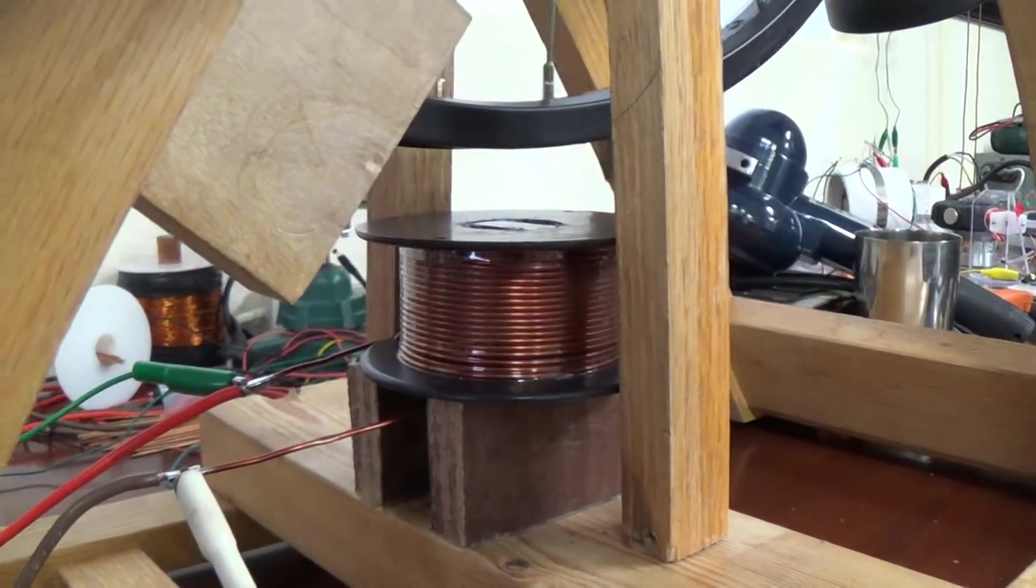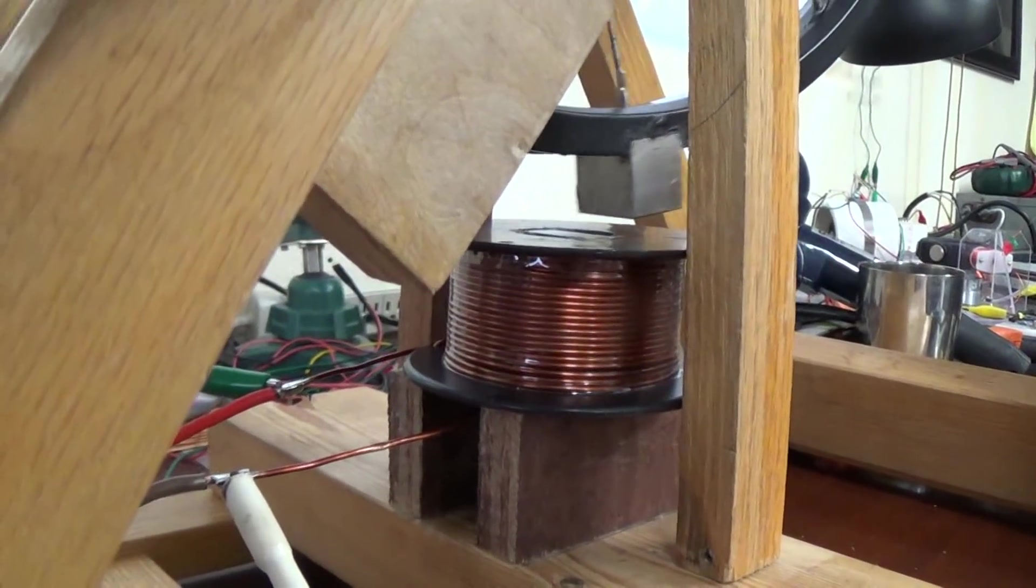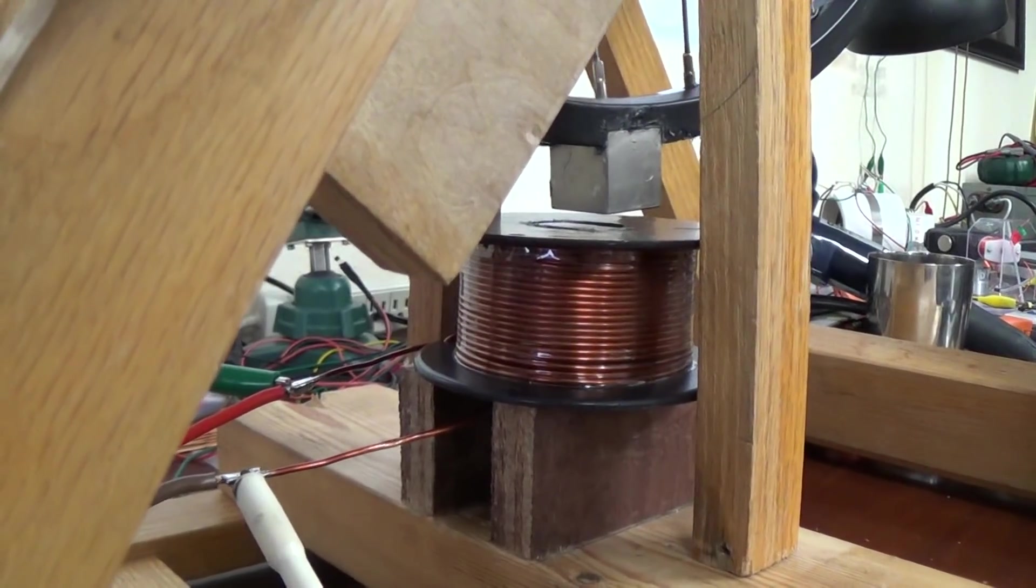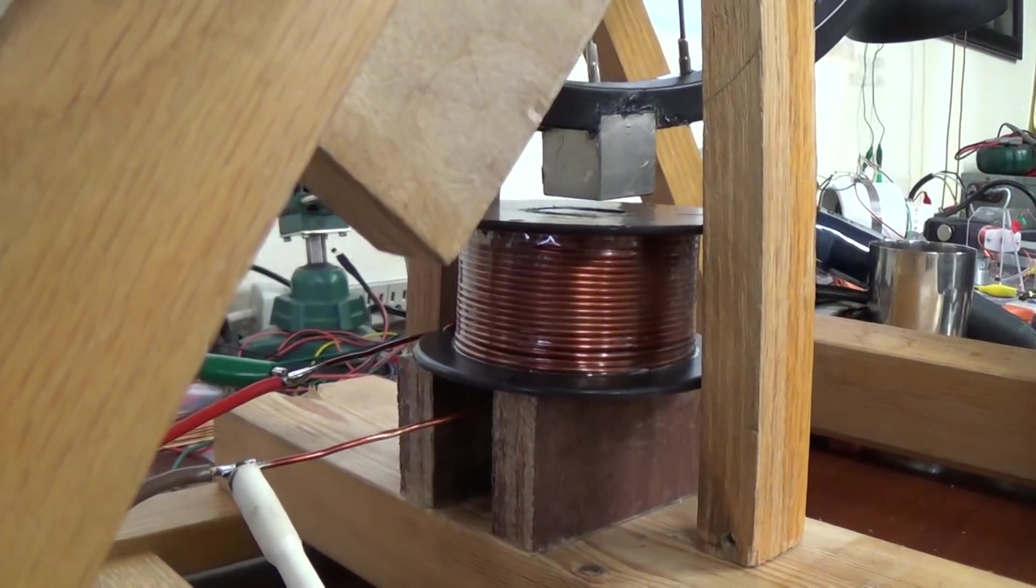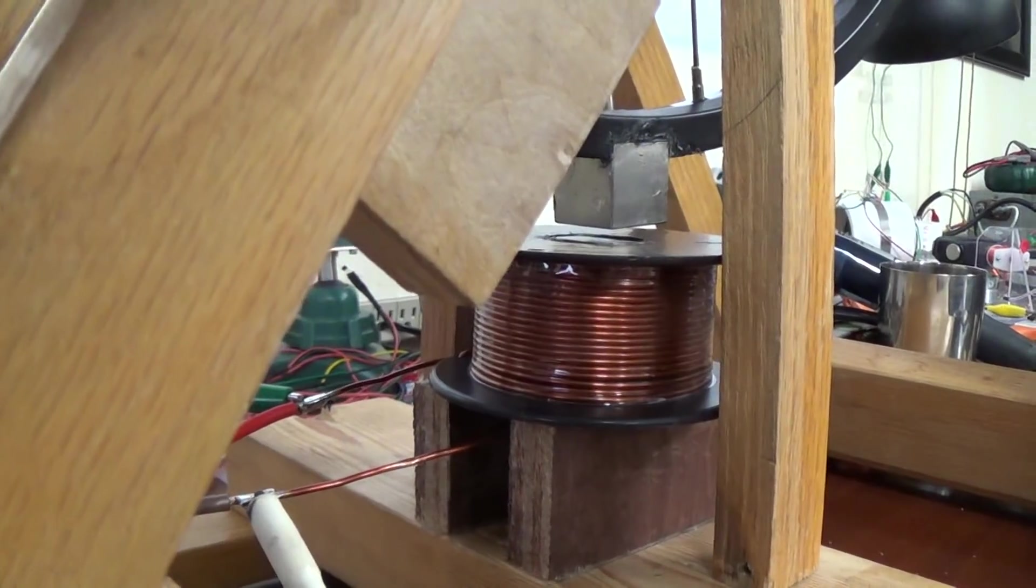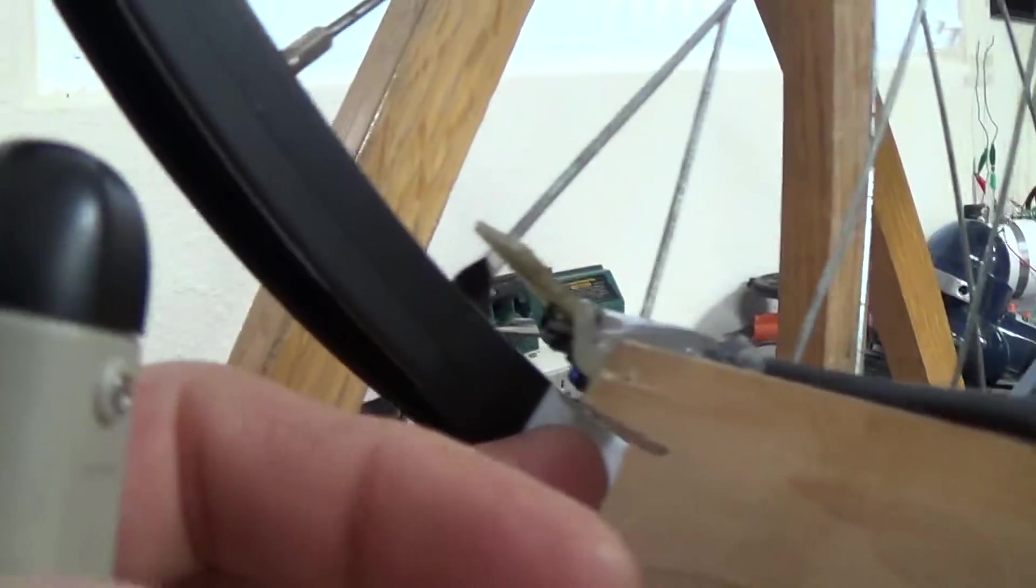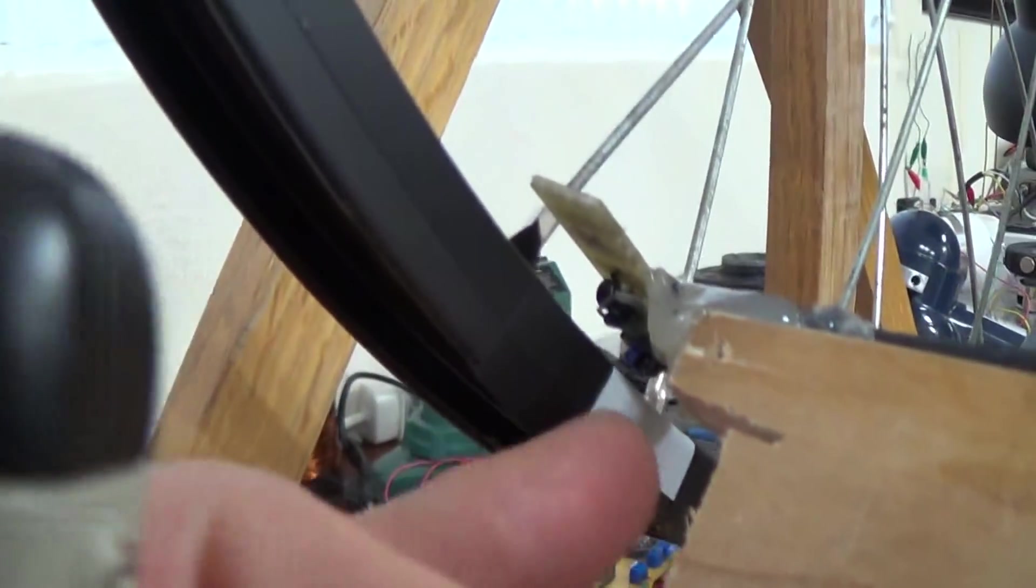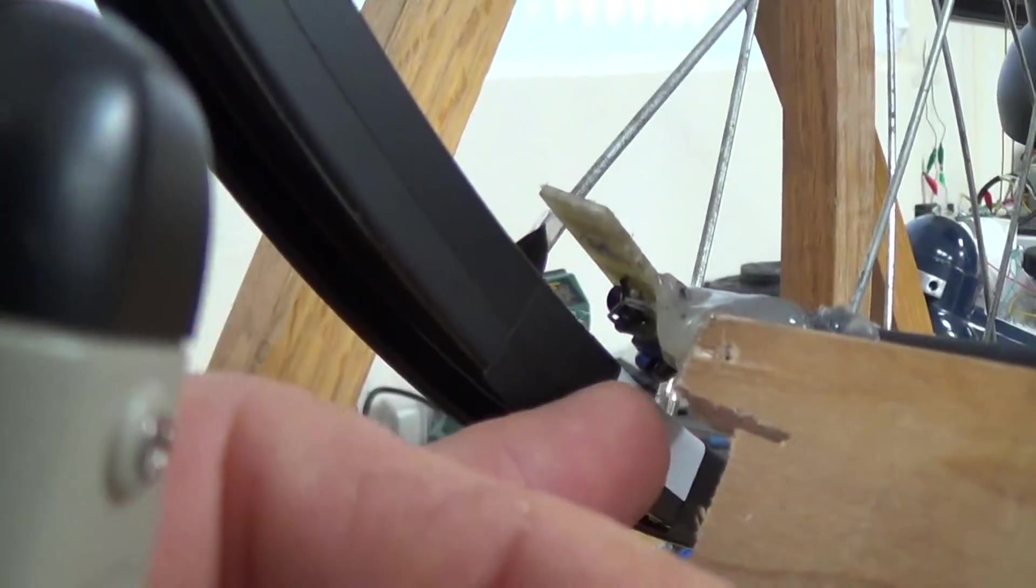The whole idea is the core is going to attract the magnet, and when the magnet gets to this point here where it sticks, it will then energize. I've got my optical sensor here and I've got a strip that's pretty well close to the width of the magnet.